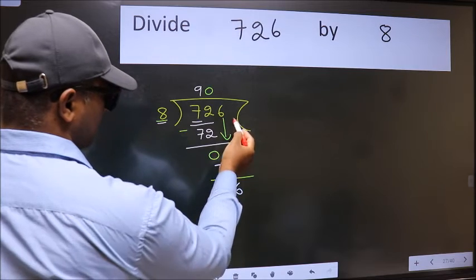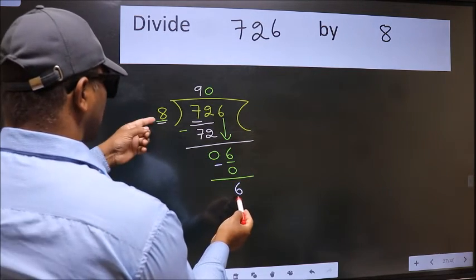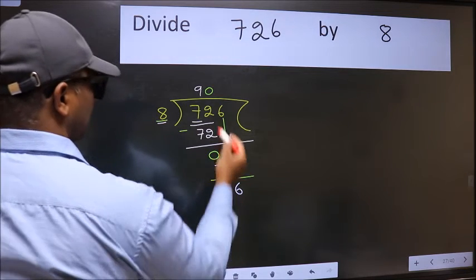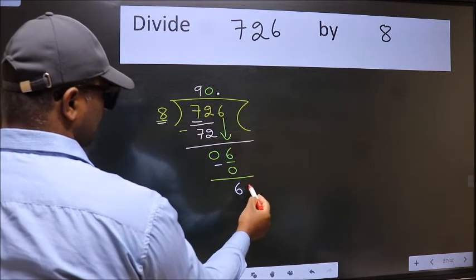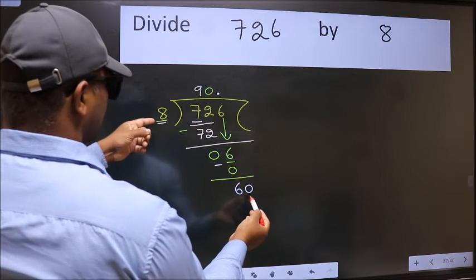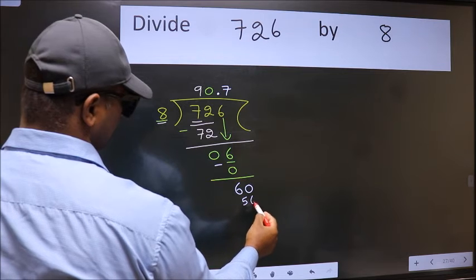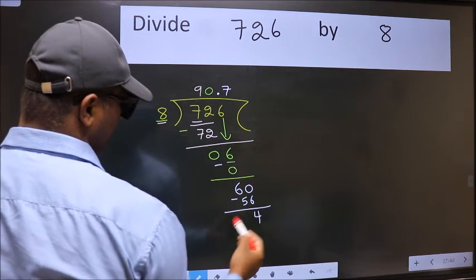Over here, we did not bring any number down, and 6 is smaller than 8. So now we can put dot and take 0. So 60. A number close to 60 in the 8 table is 8 sevens are 56. Now we subtract. We get 4.